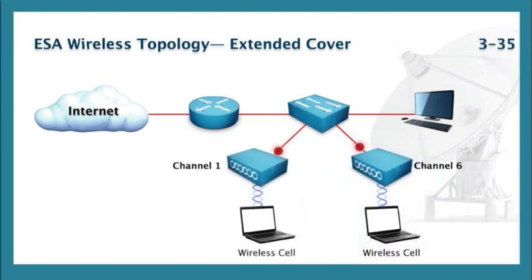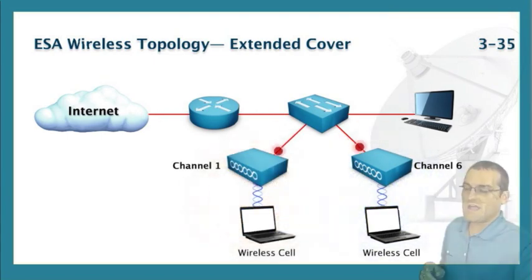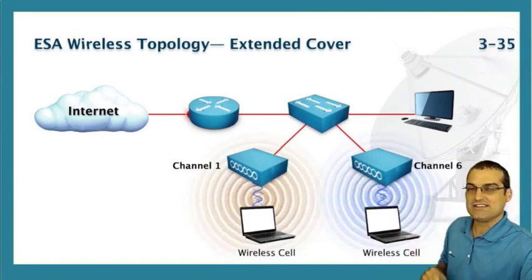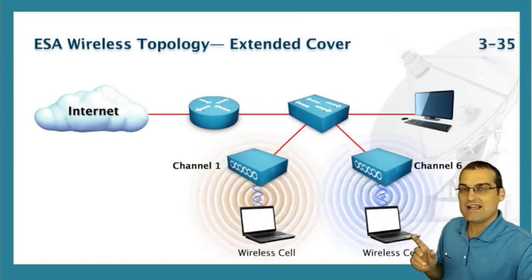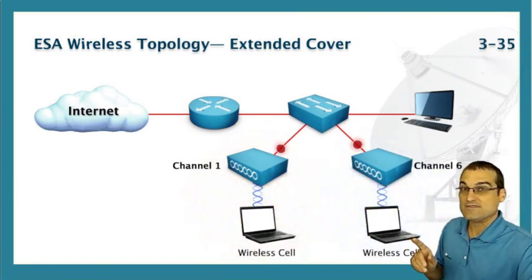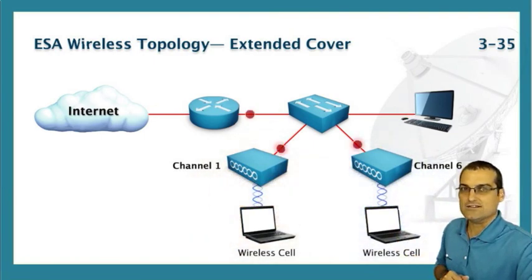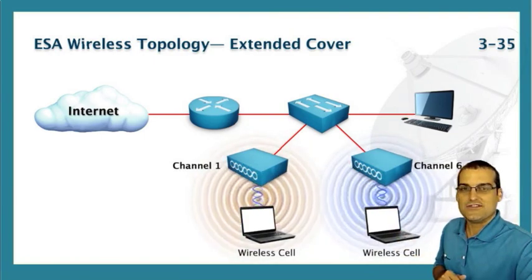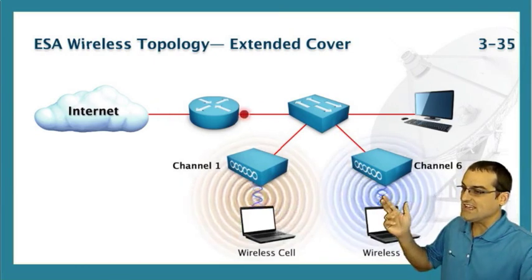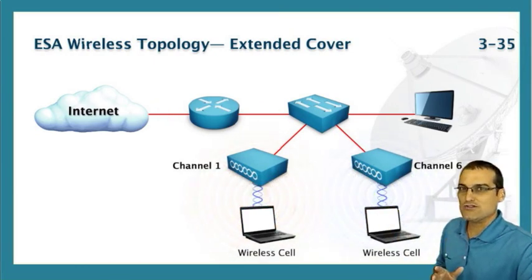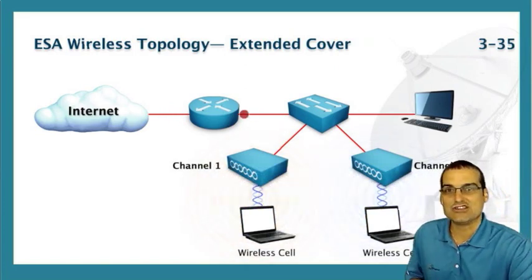Memorize these three steps. First, add a new access point — step one — and place it on a non-overlapping channel. In the case of 802.11g, a perfect example would be channel six and channel one, which are non-overlapping channels.